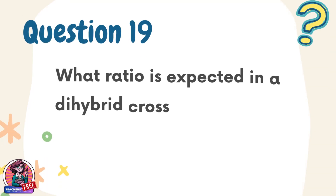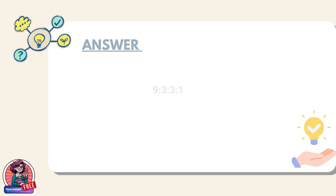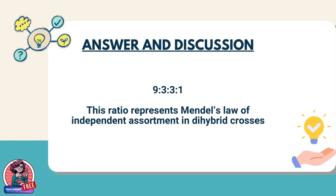Question 19. What ratio is expected in a dihybrid cross between two heterozygous individuals? Answer: 9:3:3:1. This ratio represents Mendel's law of independent assortment in dihybrid crosses.